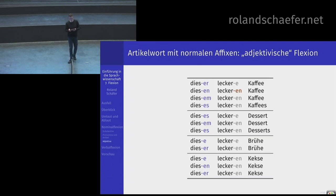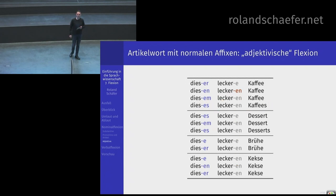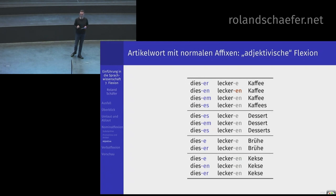Wenn normale Artikelwörter dem Adjektiv vorangehen, kommt die echte adjektivische Flexion: dieser leckere Kaffee, diesen leckeren Kaffee, diesem leckeren Kaffee, dieses leckeren Kaffees. Da kommt immer nur E oder N – und das sind die häufigsten Flexionsendungen des Deutschen überhaupt, haben also einen sehr geringen Differenzierungswert.